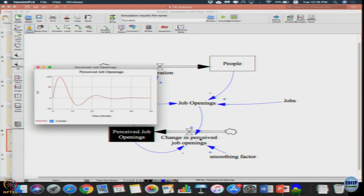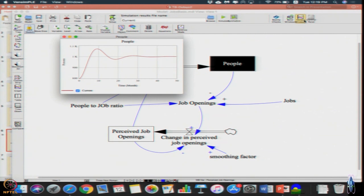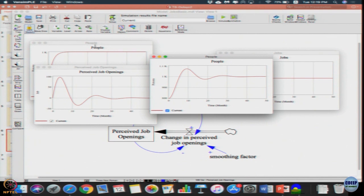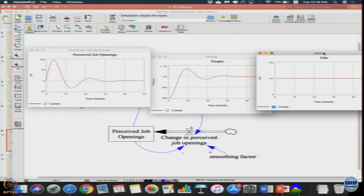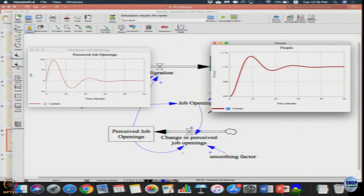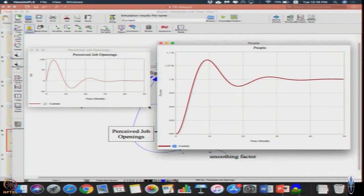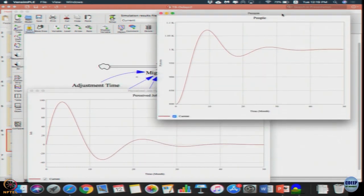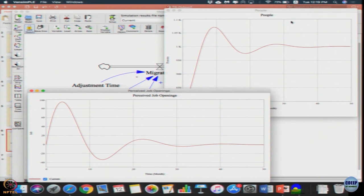The only variable which also can keep changing and can cause this behavior is not the jobs, but we are taking the difference between jobs and the people. There is a second stock in the system. So let us see the behavior of that. Let me get all the output variables: jobs, people. This is perceived job openings and people.